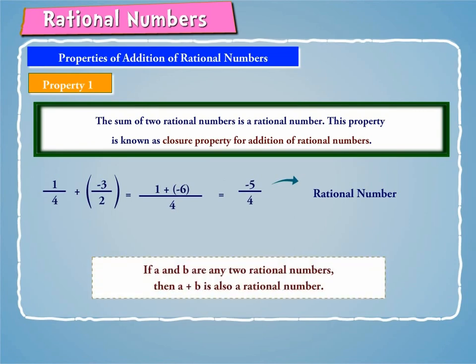Thus, if A and B are any two rational numbers, then A plus B is also a rational number.